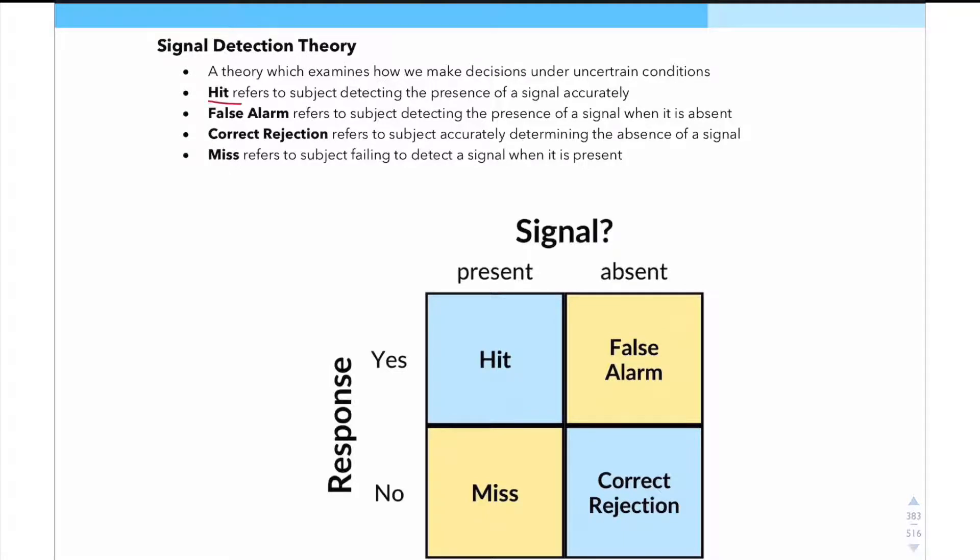So if we take a look at our definition, a hit refers to the subject detecting the presence of a signal accurately. Now we also have a false alarm over here, where a false alarm refers to a subject detecting the presence of a signal when it is absent.